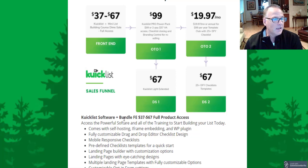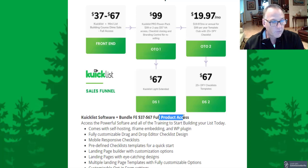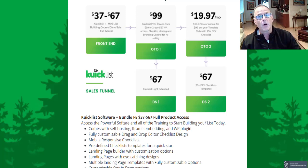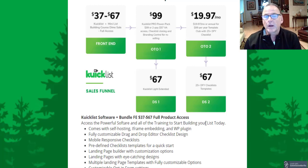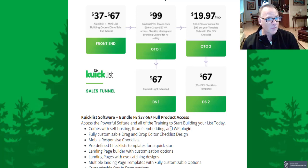The front end of Quicklist is $37 to $67 depending on when you pick it up during the launch period. You get full product access, access to the powerful software and all of the training modules, and you can start building your list today. All my free custom bonuses and all those vendor bonuses are included with the front end product, so for $37 to $67 you can be building the foundation for your online business.